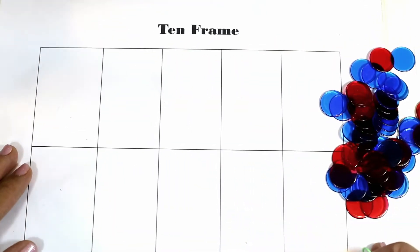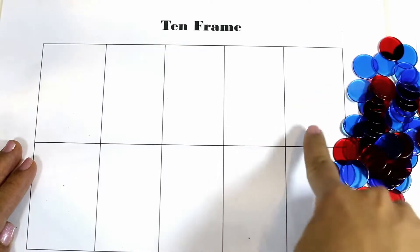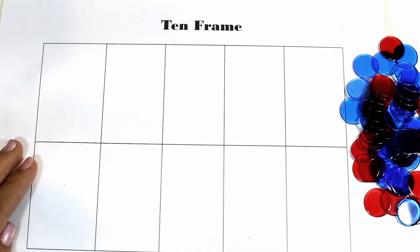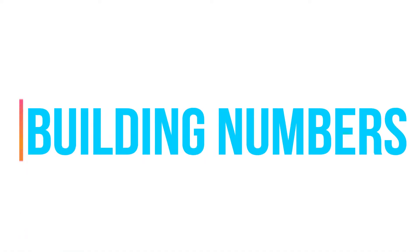You can use paper clips, you can use food, you can use erasers, you can use little rocks. So this first activity is basically just building numbers.